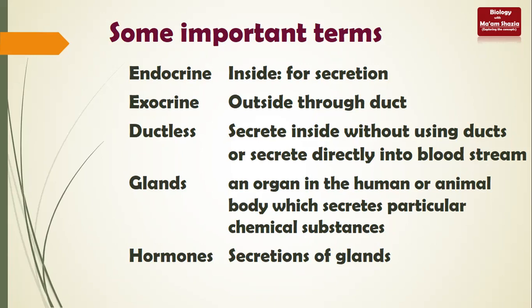Some glands are endocrine glands and some are exocrine glands. Now, what is a gland? A gland is a type of organ that has the capability to produce and then release some secretions - some chemicals.